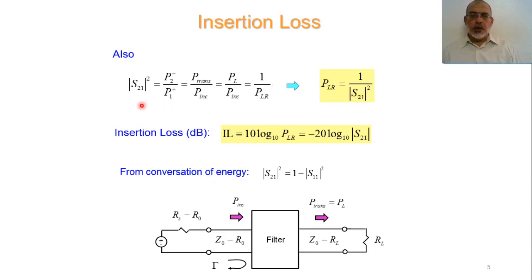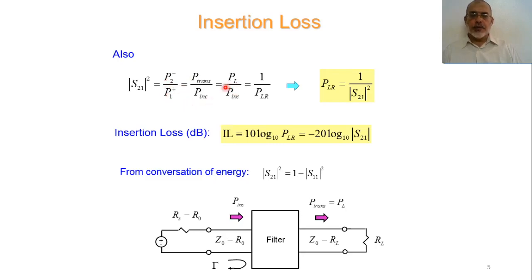So |S21|² is the transmitted power over the incident power, which equals P_load / P_incident, or equivalently 1 over the Power Loss Ratio.